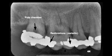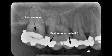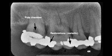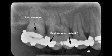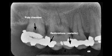The arrow to your left points to the pulp chamber, which is radiolucent. The areas that the other arrows point to are amalgam, radiopaque metal fillings in the tooth structure.